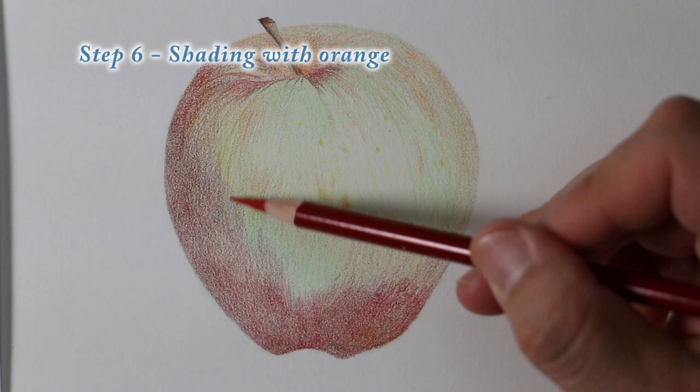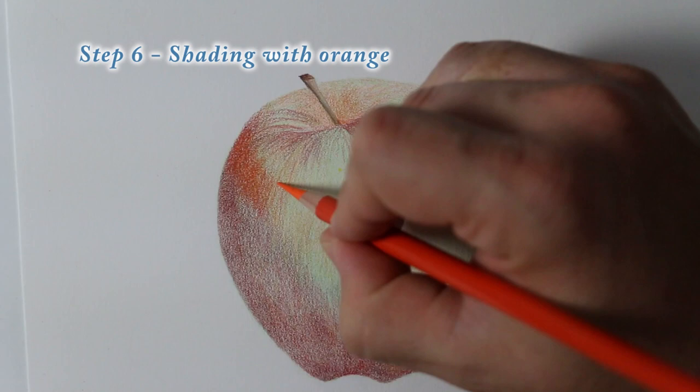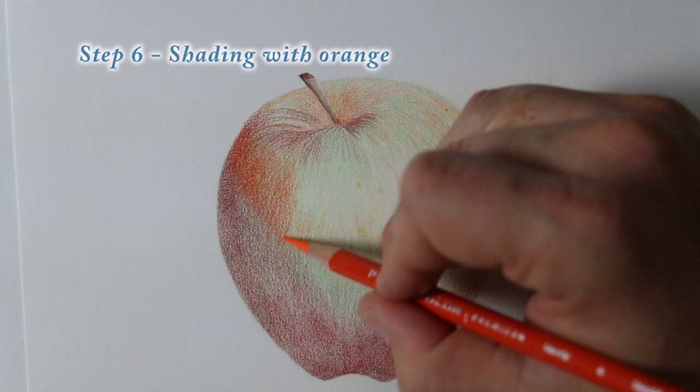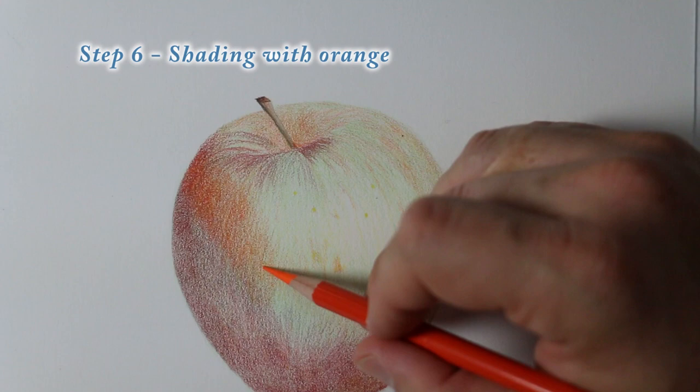Now I'm shading with orange quite a bit right here in this area right where the shadow will start in the apple where the light will be tapering off and you'll see more of just the darkness in the shadow of that apple.